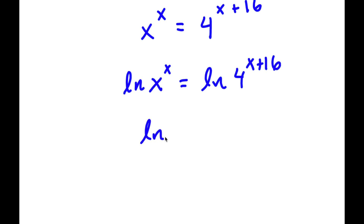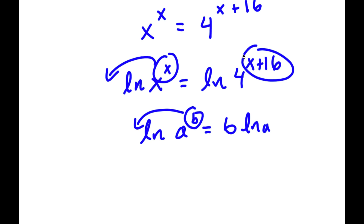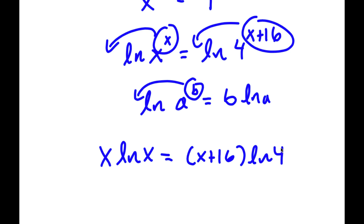If I take the ln of something in the form a to the power of b, I can move the exponent b to the front, so it equals b times ln a. So ln of x to the power of x becomes x times ln x, and ln of 4 to the power of (x plus 16) becomes (x plus 16) times ln 4. So now I have x times ln x equals (x plus 16) times ln 4.